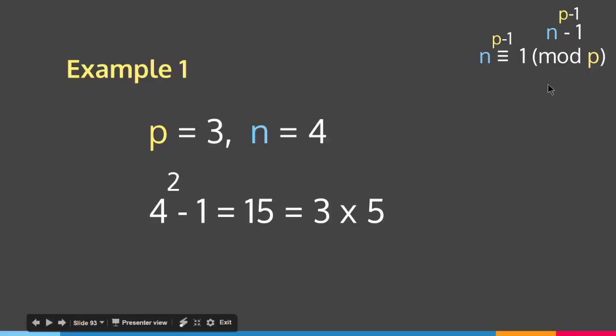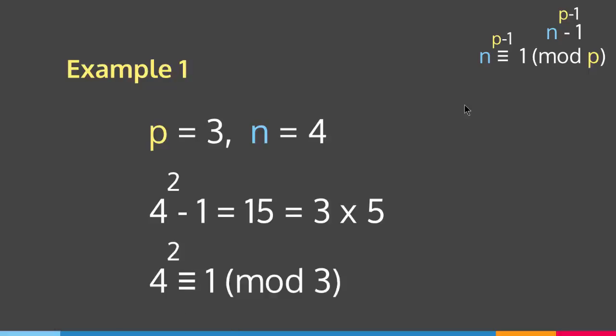For the congruence form, n to the p minus 1 must be congruent to 1 mod p. So we check 4 to the (3 minus 1) = 4 squared = 16. Now 16 mod 3 gives a remainder of 1, since 16 = 3 × 5 + 1. So 4 squared is congruent to 1 mod 3. ✓